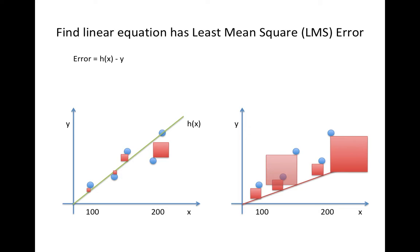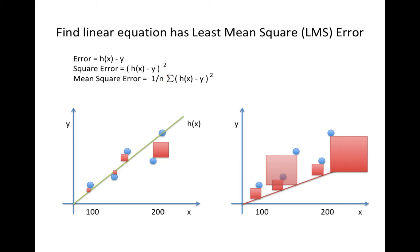As demonstrated here, the error is the distance between our line and the real observed data. Here, h(x) is our linear equation, standing for hypothesis given x. Square error is just the error squared, and mean square error is the average of the square errors — that is, the sum of square errors divided by the count of observed data.